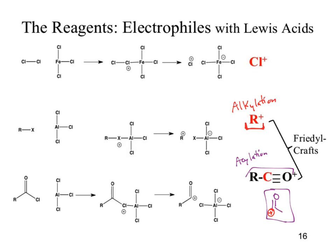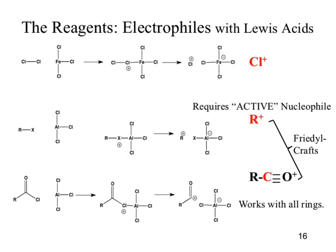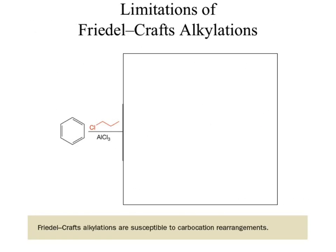Which one's which? Alkylation is the top because all we're adding is an alkyl group. For the bottom it's acylation because we're adding an acyl group. As we'll find out later, these reactions have varying conditions under which they work well and sometimes don't work very well at all. The acylation works a little bit nicer — it works with all rings. We can form the acylium ion; sometimes we can't form the carbocation.